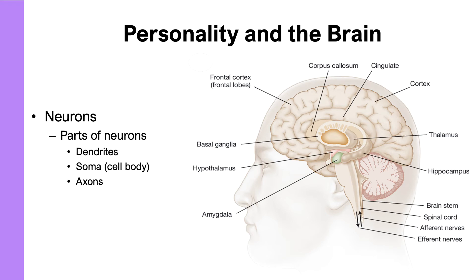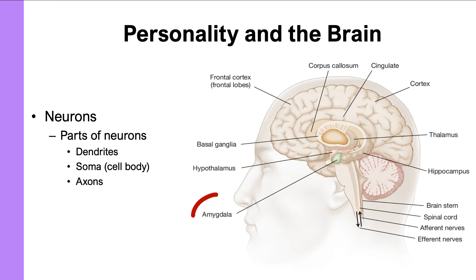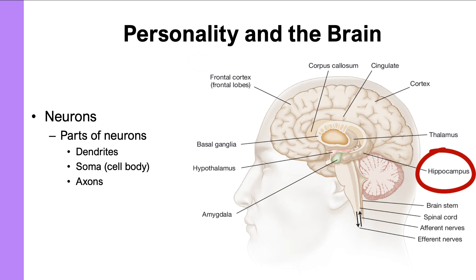Neuroscience research has identified specific brain parts consistently related to personality differences. The frontal cortex, or frontal lobes, located in the front of the head, has been associated with decision making, planning, moral reasoning, and traits like conscientiousness. The amygdala is highly related to processing emotions, specifically threat or reward. It is closely connected to the hippocampus, involved in memory, so that our memories are coded with emotion — remembering rewarding things and learning to avoid threatening ones.